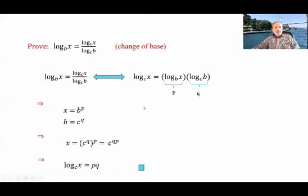Here is the change of base proof. I want to prove log c of x equals log b of x times log c of b. Let P equal log b of x and Q equal log c of b. From the definition, x equals b to the power P and b equals c to the power Q. Now x is b to the power P and since b equals c to the power Q, I replace b to get x equals c to the power PQ, using the property of exponentials. Then by the definition of logarithm, log c of x equals PQ.